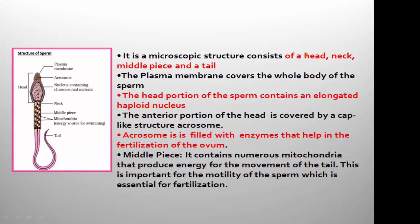The parts of a mature sperm are: head, neck, middle piece, and tail. The sperm is a microscopic structure and the entire sperm is covered by a plasma membrane. In the image you can see the complete sperm covered by plasma membrane. The head is at the top, followed by the neck, then the middle piece, and it is continued with the tail — these are the four structural parts of a mature sperm.